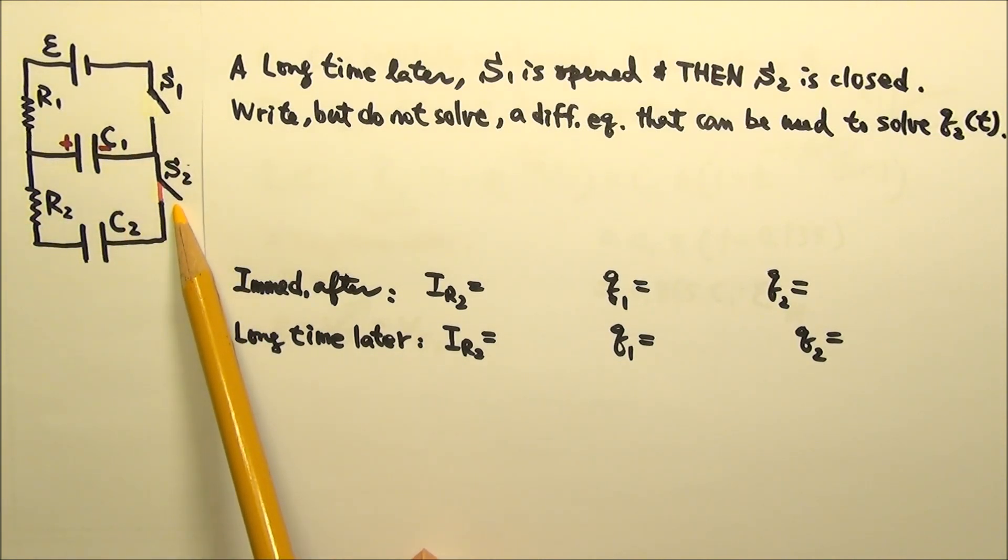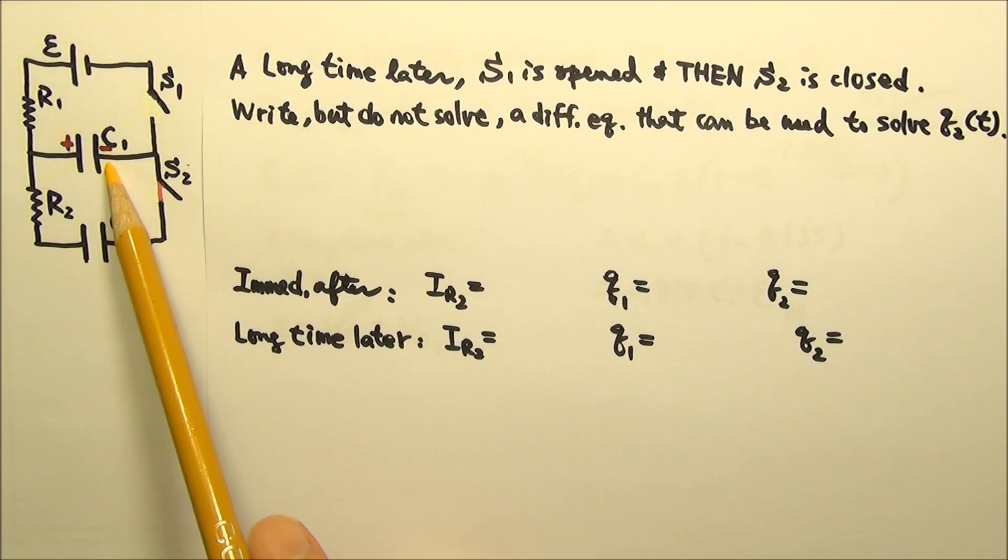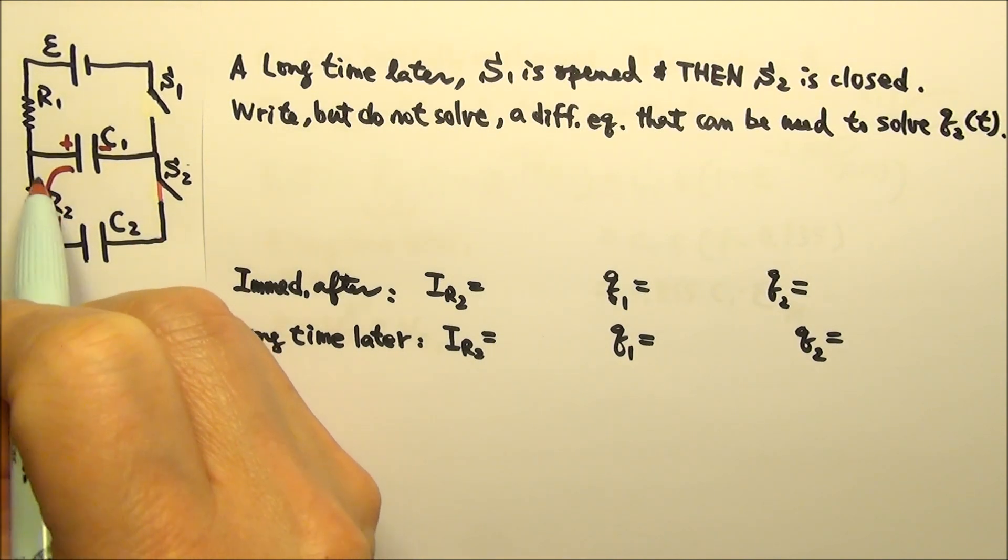After S2 is closed, C1 will charge up C2. Positive charges will flow this way onto C2 and negative charges that way. So the current flows counterclockwise.